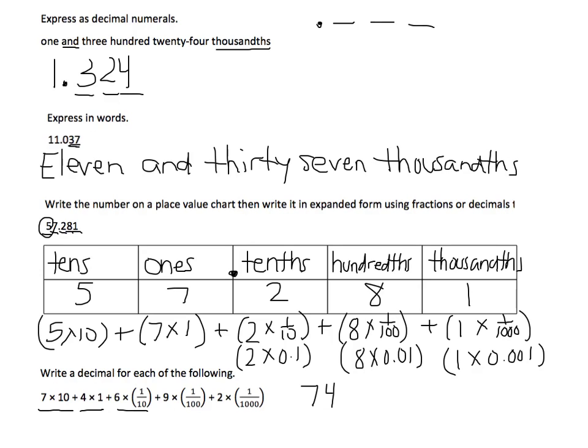6 times 1 tenth tells me that I need a decimal, and then put a 6 in the tenths place. 9 times 100 is a 9 in the hundredths place. And 2 times 1,000 is a 2 in the thousandths place. That's how you would write a number in standard form from expanded form.